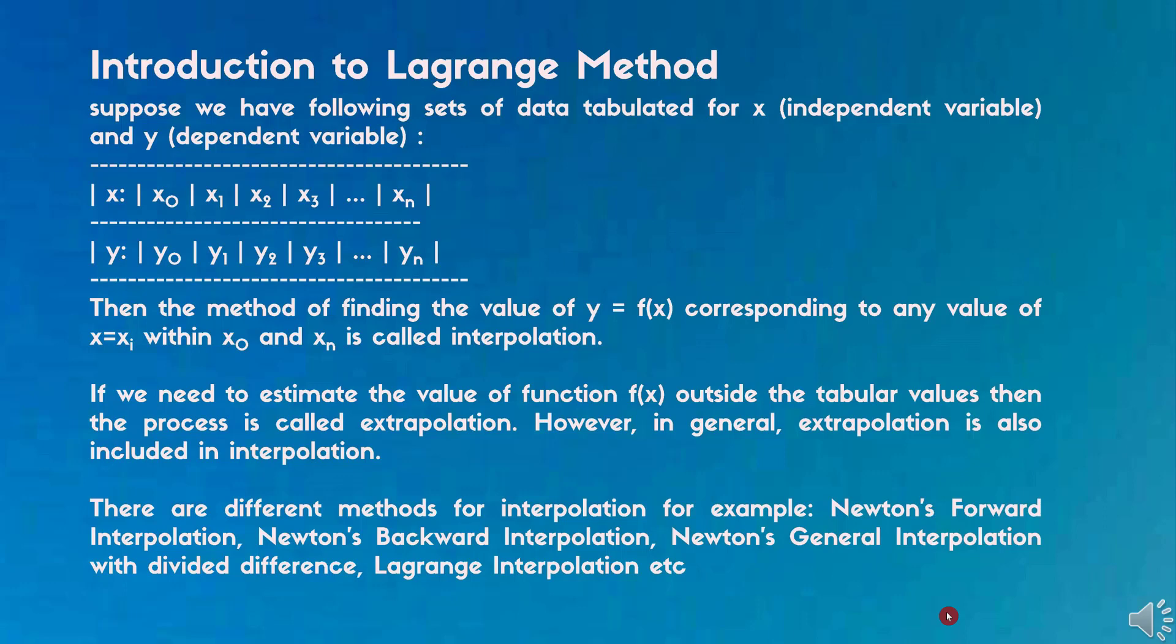In other words, we can define interpolation as a technique of calculating the value of a function for any intermediate value of independent variable. For example, if we are given various values of y equals f of x for a given set of values of x, then the process of finding the value of y corresponding to any value of x is called interpolation, while the process of computing the value of function outside the given range is called extrapolation.